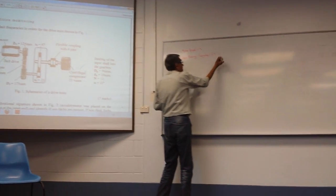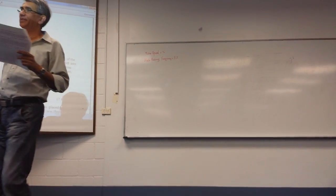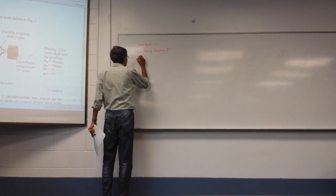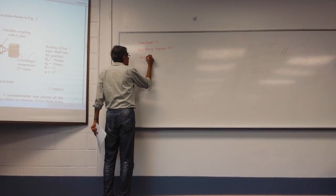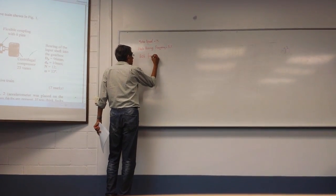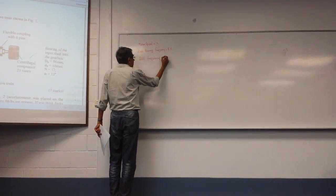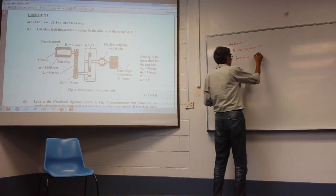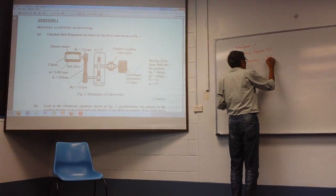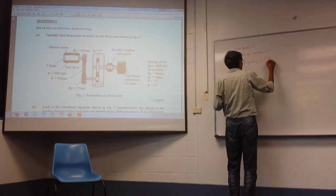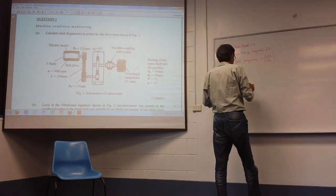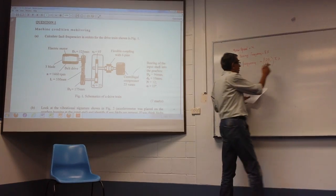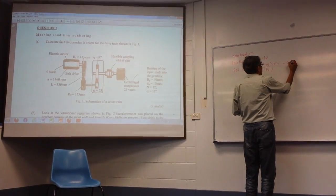The belt frequency is calculated as the chart speed times x by time. Number of blades times the speed. After that we can calculate the belt frequency. The belt frequency formula uses d1 over d2, equal to 125 divided by 175 times 5x. When you simplify this, it comes to 0.714x.